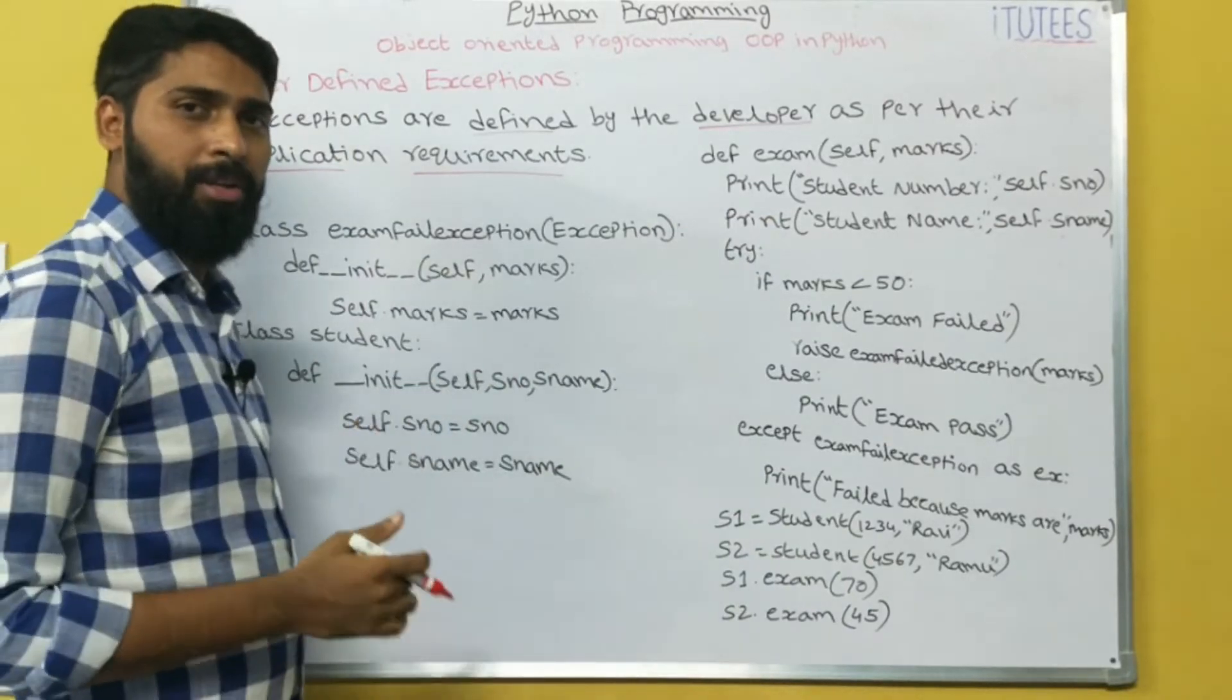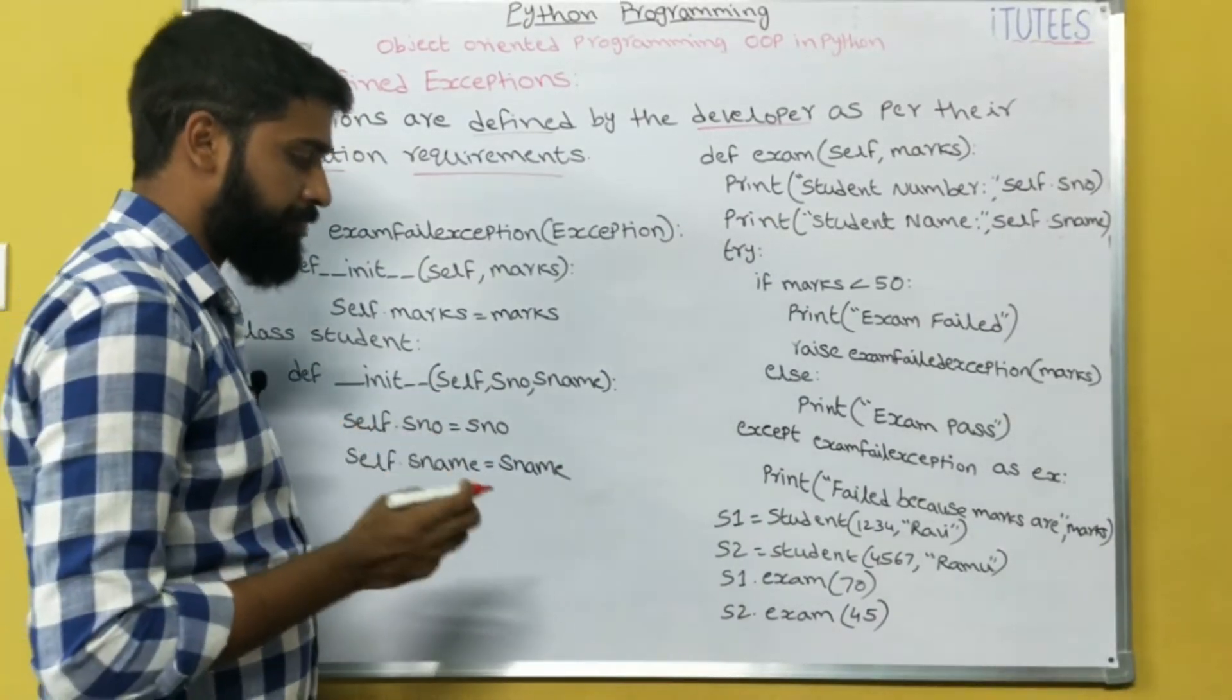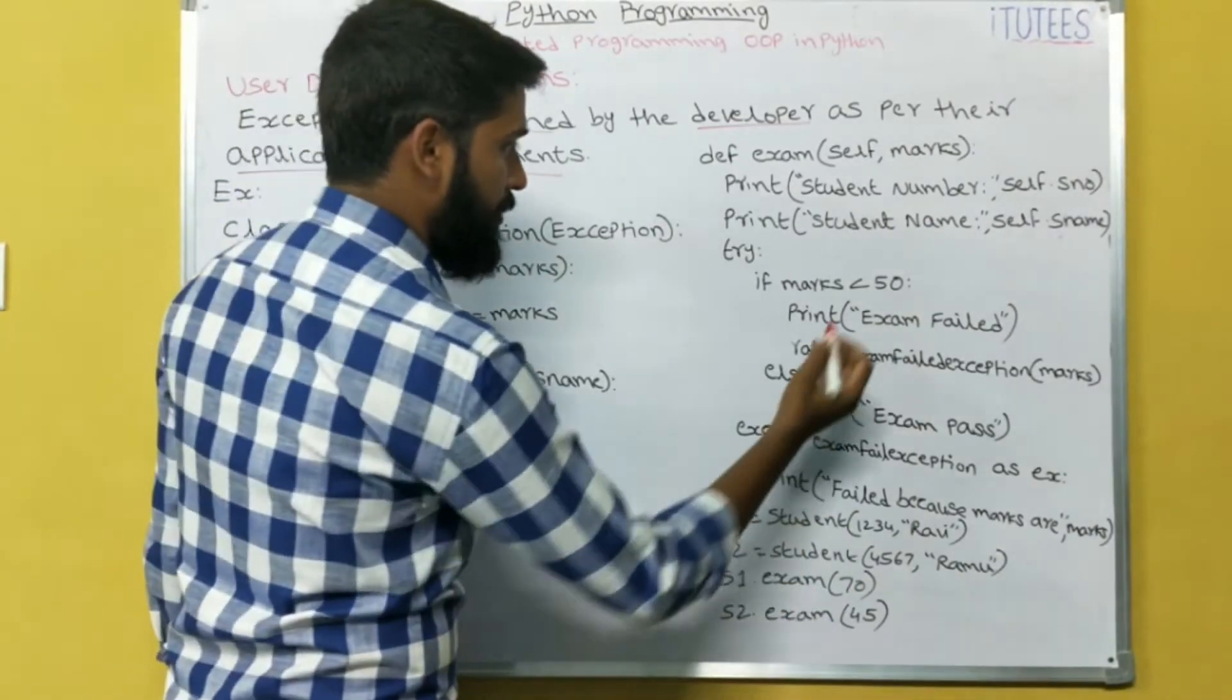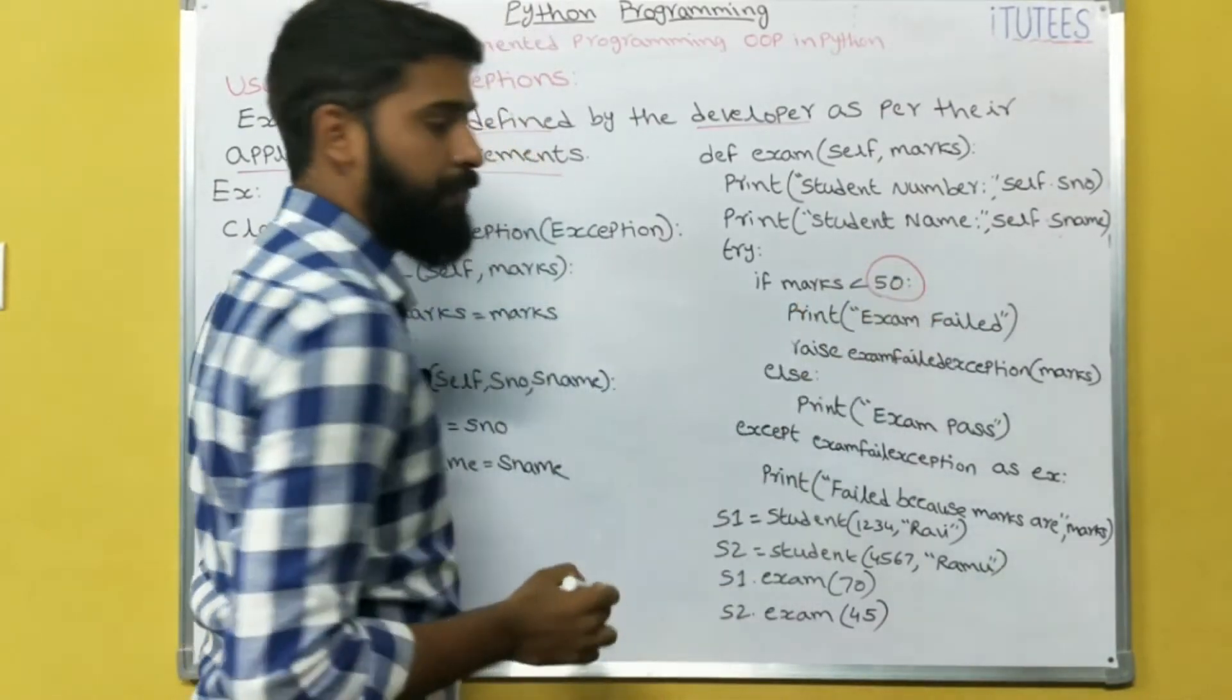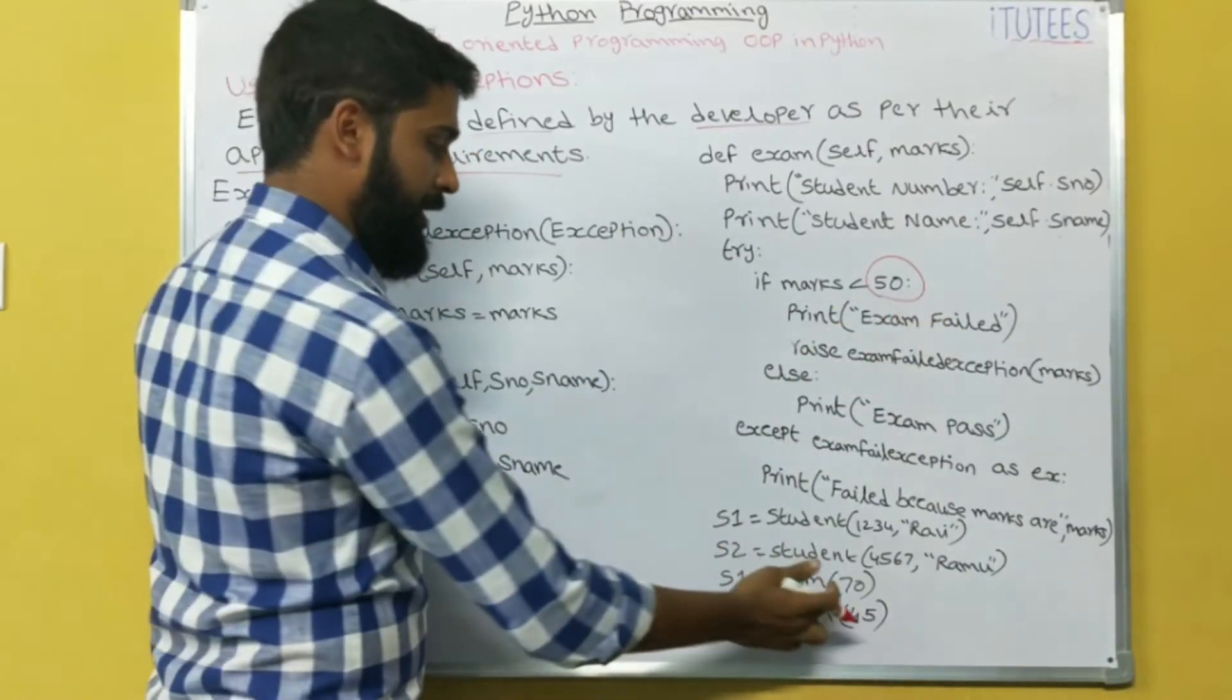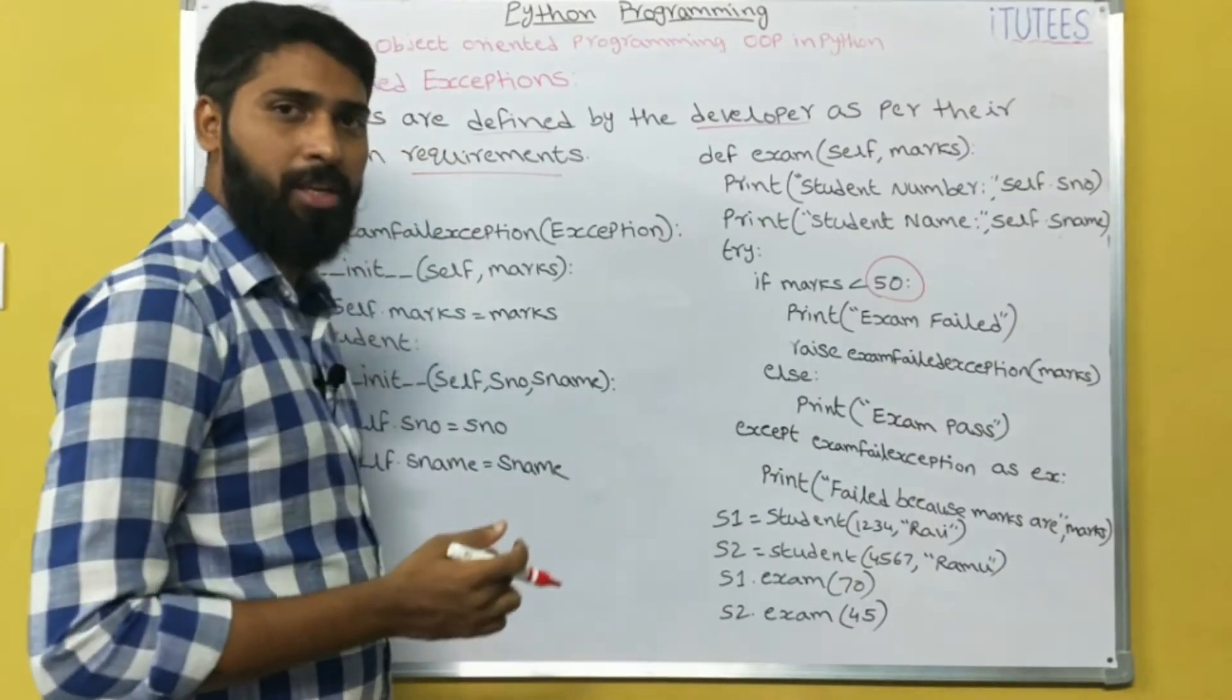This is the example for user defined exception. In this program we are going to check the marks of the student. If the marks of the student is less than 50 then we treat that as an exception. If it is greater than 50 then we are going to treat the exam passed.